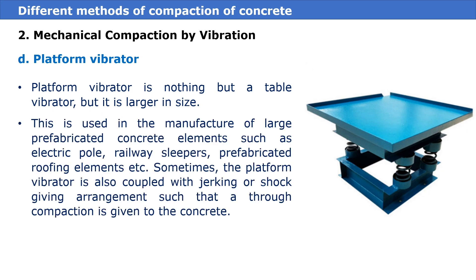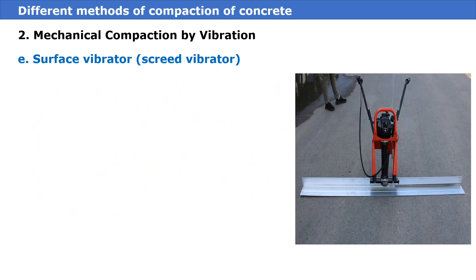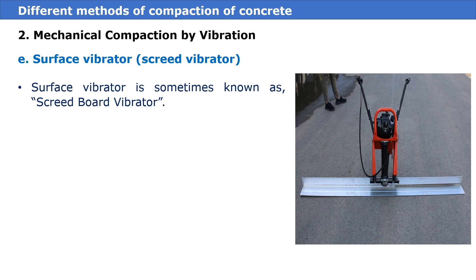Fourth is the platform vibrator. The platform vibrator is essentially a table vibrator but larger in size. It is used in the manufacture of large prefabricated concrete elements such as electric poles, railway sleepers, and prefabricated roofing elements. Sometimes the platform vibrator is also coupled with jerking or shock-giving arrangements so that true compaction is given to the concrete.